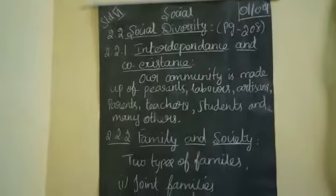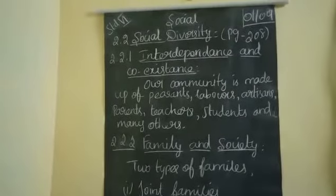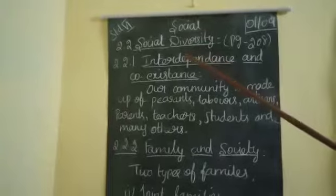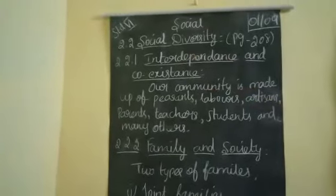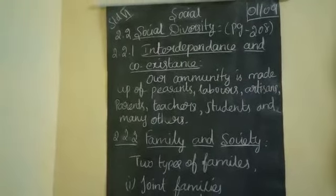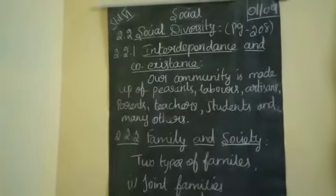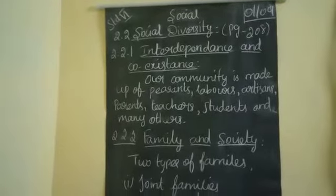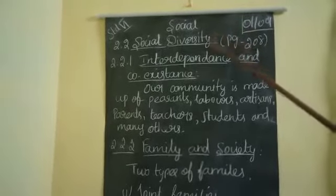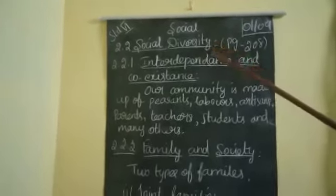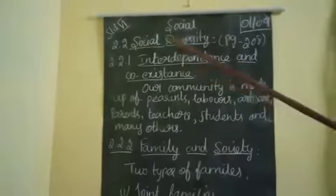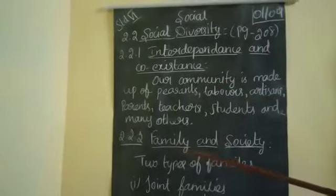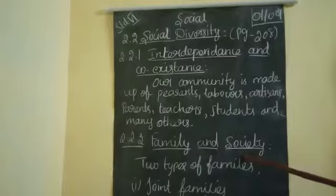Good morning students. Today I am going to explain social diversity. This is the second point. Last class we studied the first two points: landforms and lifestyle diversity. This is the second diversity — social diversity. In social diversity we have two points: one is interdependence and coexistence, and another one is family and society.